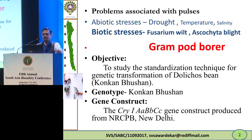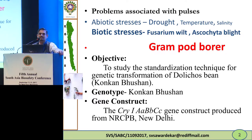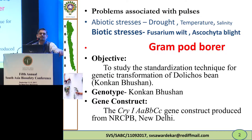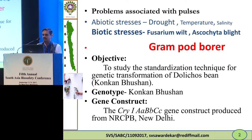The objective of the study was to standardize the technique for genetic transformation in Dolichos bean. We used a genotype released 20 years ago, but this variety is now becoming susceptible to the pest. The gene construct used is CRI1-AABBCC, which was provided by the NRCPB, New Delhi.